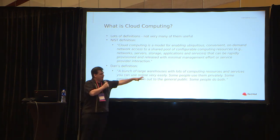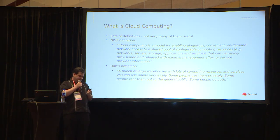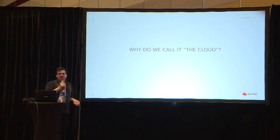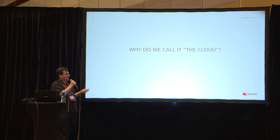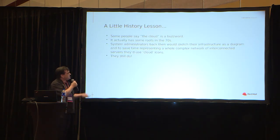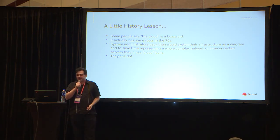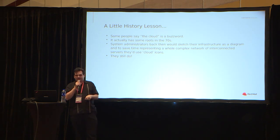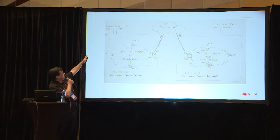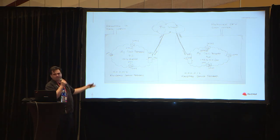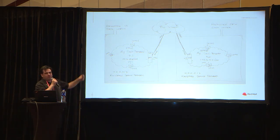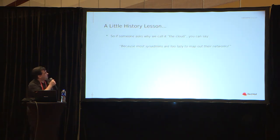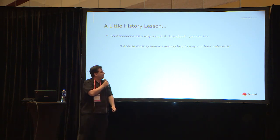But why do we call it the Cloud? A lot of people tend to think of Cloud as a buzzword, and it has been used as one. But really it has some historical roots — it actually has roots in the 70s. System administrators back then would try to sketch out their infrastructure as a diagram, and to save time representing a whole complex network of interconnected servers, they'd just use a Cloud icon. And they still do. For example, here from Rackspace is a network diagram. You've got Cloud 1, Cloud Network 2, and even the Internet represented as a Cloud — a nice simple way to represent a network. So if somebody asks why we call it the Cloud, you could say because most sysadmins are too lazy to map out their networks.